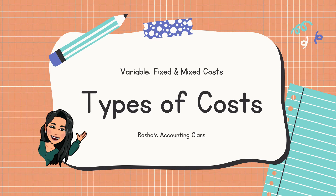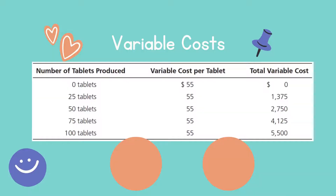Hello, today I'm going to differentiate between variable, fixed, and mixed costs — this is managerial accounting. The first type is variable costs. Variable costs are like wages; for example, if I pay $10 per hour for each worker, that $10 per hour will not change.